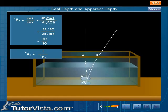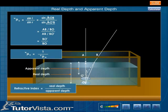Therefore, the refractive index W mu A is equal to BO divided by BO dash. That is, refractive index is the ratio of the real depth to the apparent depth.